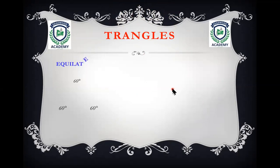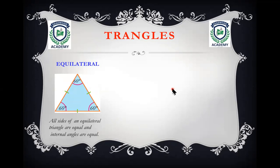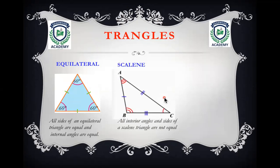Triangles: 'tri' means three. A triangle is a geometric shape that has three sides. An equilateral triangle — 'equi' means equal, 'lateral' means lines — has all three sides equal and all interior angles equal. A scalene triangle has all sides different in length and all interior angles unequal.